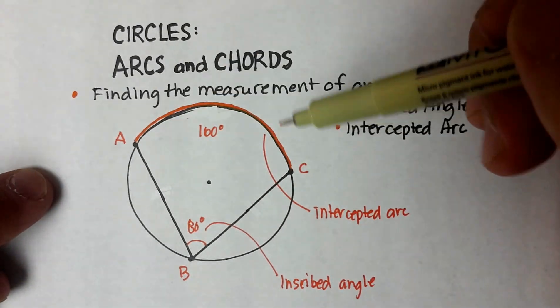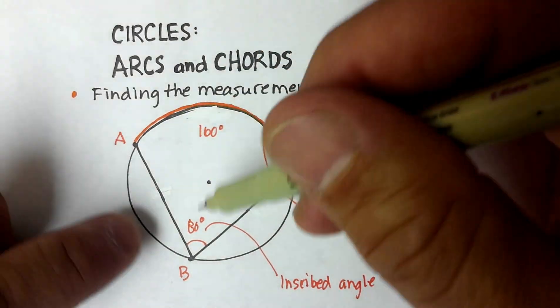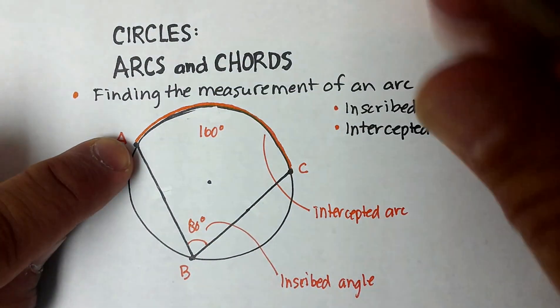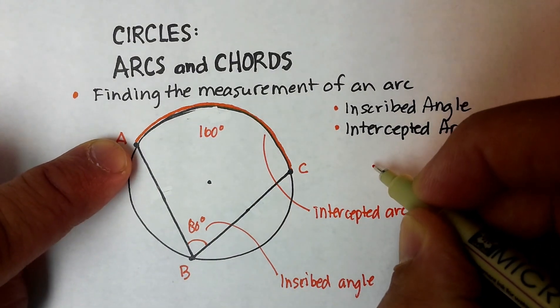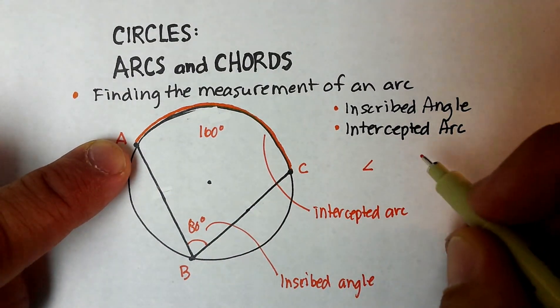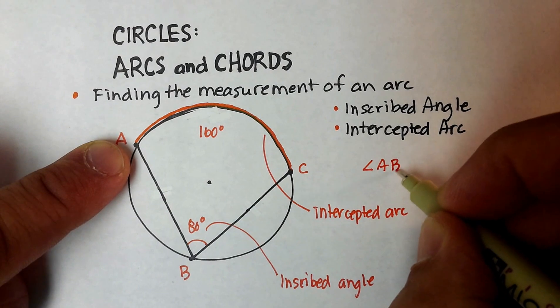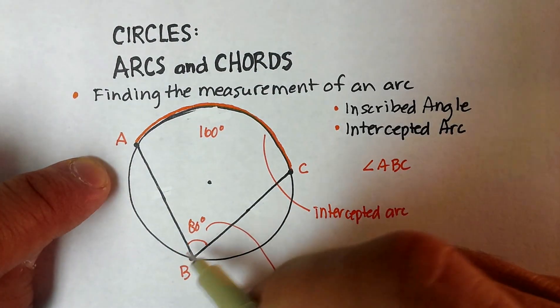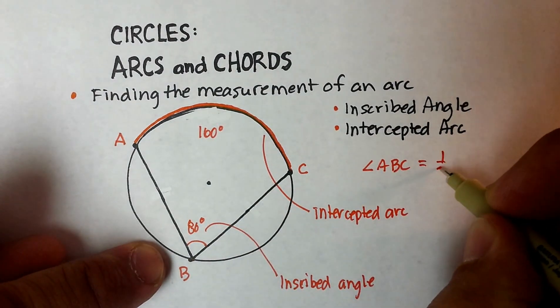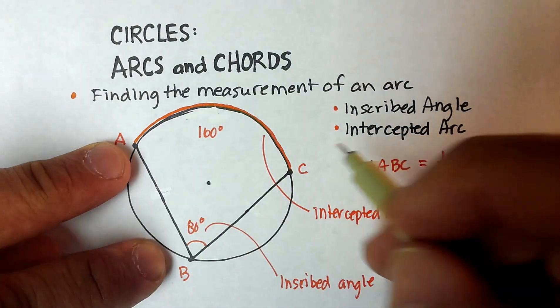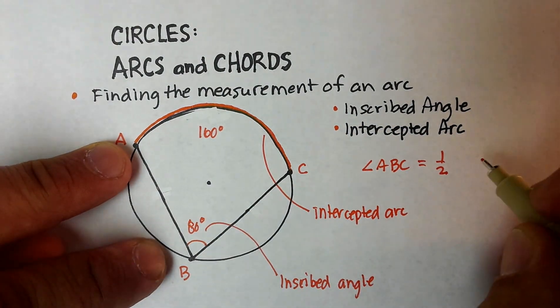And in the reverse, the way you can find the angle is if you took one-half. So the angle, we'll call this angle ABC, is equal to one-half the inscribed arc.